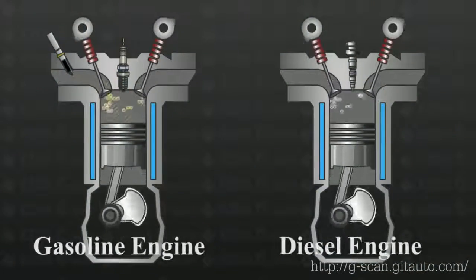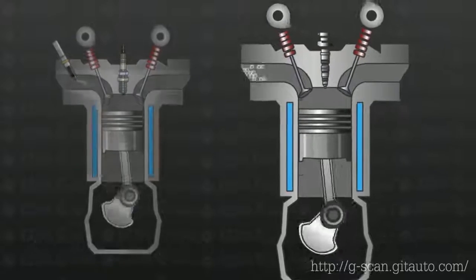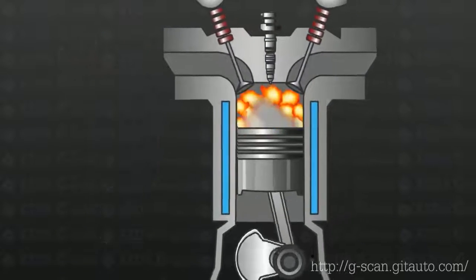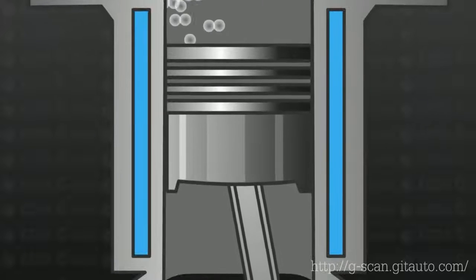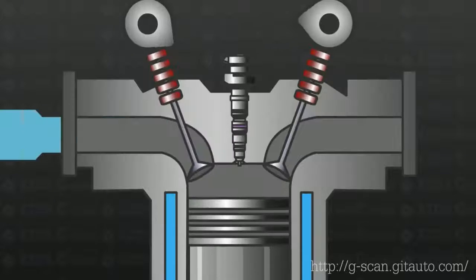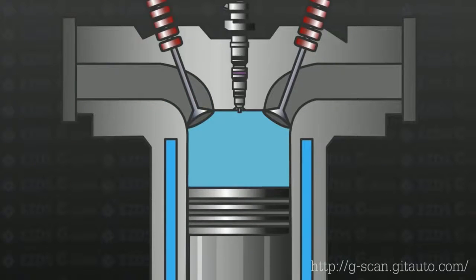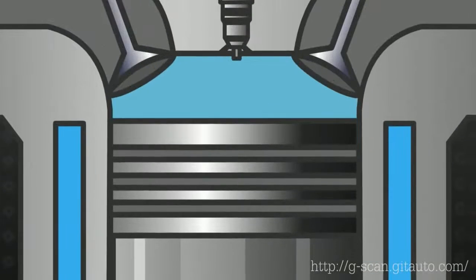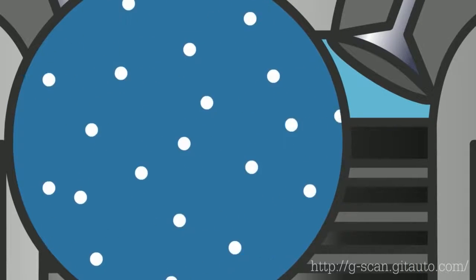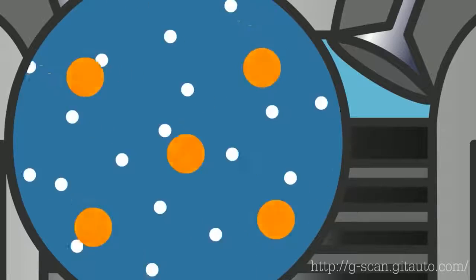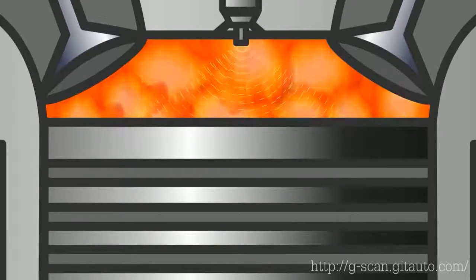Diesel engines, unlike gasoline engines, do not have a spark ignition system. Combustion occurs due to the heat produced from the compression of air, which raises the temperature of the air-fuel mixture to its auto-ignition point. Depending on the design, the compression ratio ranges between 15:1 and 23:1 or even higher. In order for the diesel engine to ignite the fuel, what it needs is highly compressed air and the right amount of fuel at the right time.